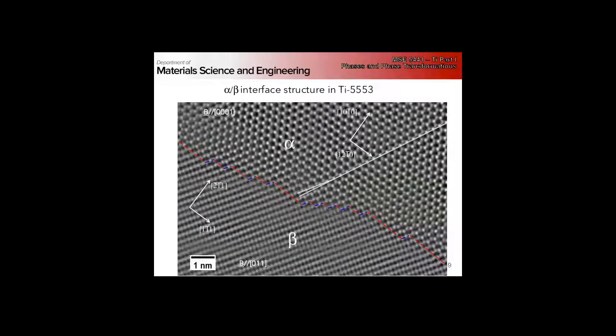This isn't just theoretical — you see it when you actually do the microscopy. This was done by one of Professor Frazier's students, and we can see the alpha-beta step-ledge faceted interface clearly. We can grow our alpha by moving these dislocations or growing the ledge out. The kinetics of this growth look very much like the kinetics of Widmanstätten plates.